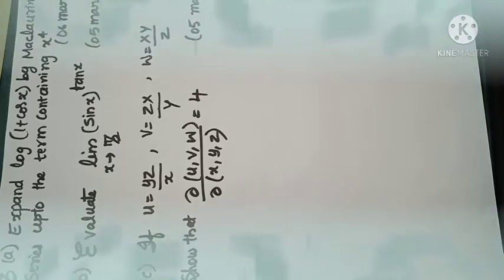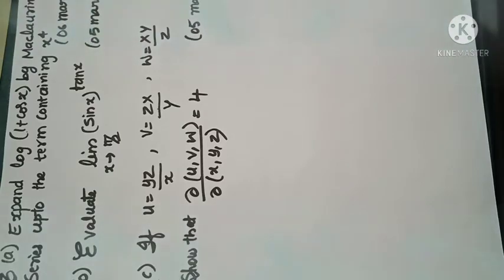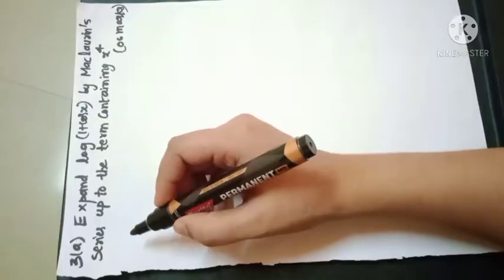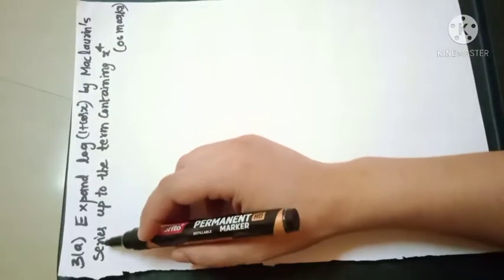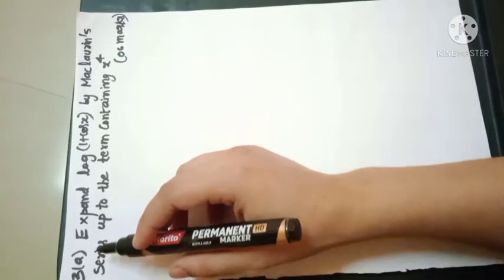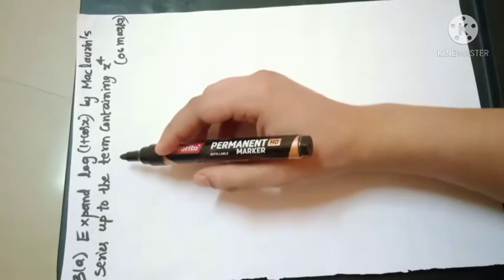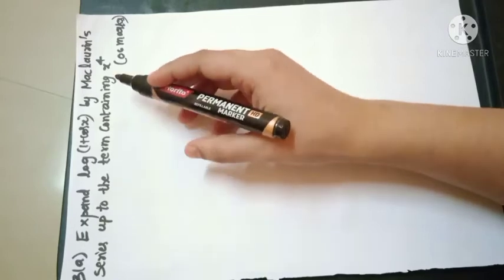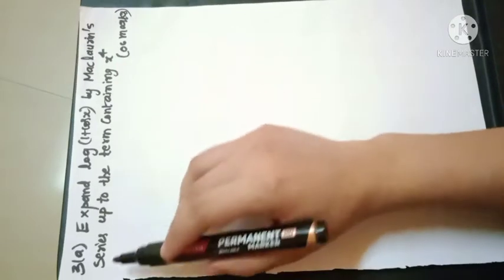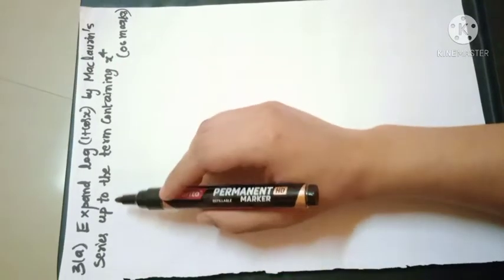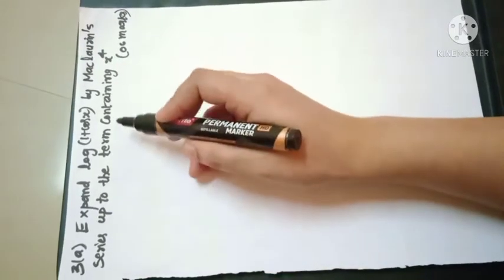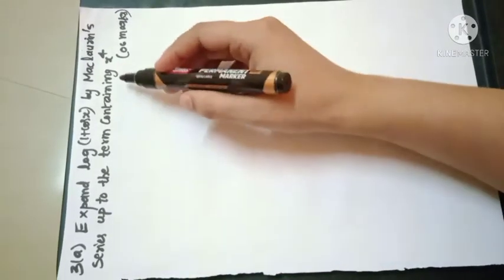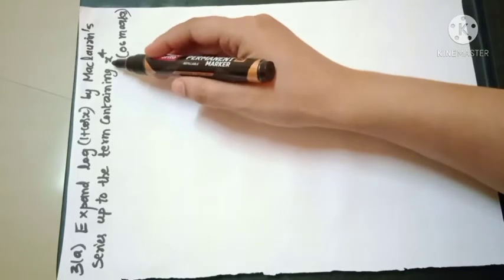Hello viewers, welcome to the video series of Zalt question paper. Question 3A is: expand log of (1 + cos x) by Maclaurin series up to the term containing x to the power of 4.